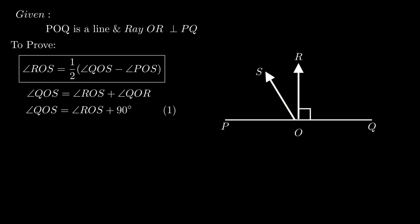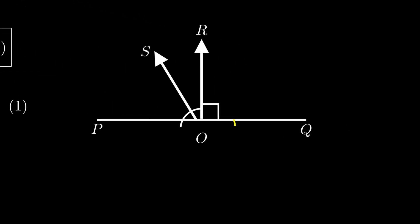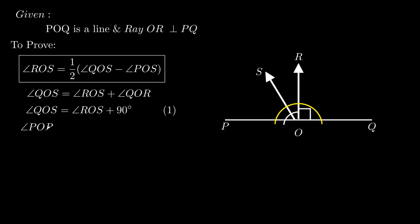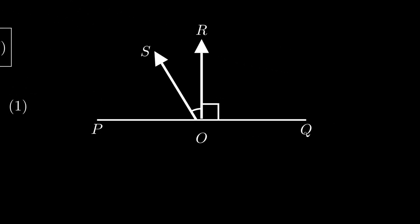From equation 1 we have two of the angles required in the proof, that is angle ROS and angle QOS. Now angle POS is a part of angle POR. As the sum of angle POR and angle QOR equals 180 degrees — since adjacent angles on the straight line form a linear pair — angle POR equals 180 minus 90 degrees, which simplifies to 90 degrees.